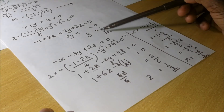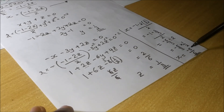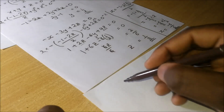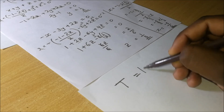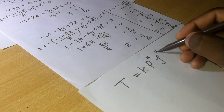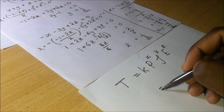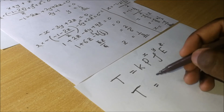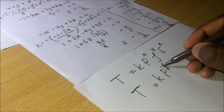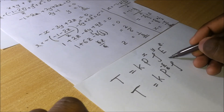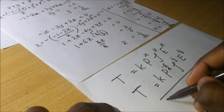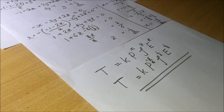We have found x = −5/6, y = 1/2, and z = 1/3. Therefore, the time period T is equal to K times P to the power −5/6, times rho to the power 1/2, times E to the power 1/3. That is our final answer.